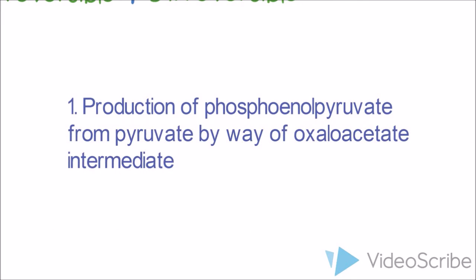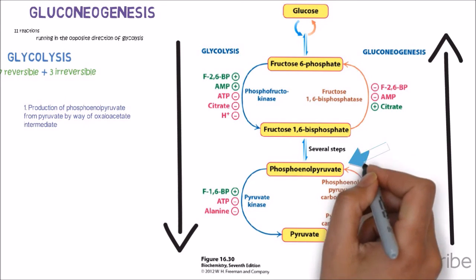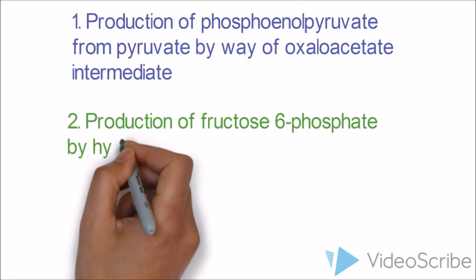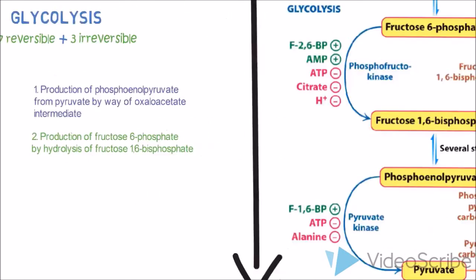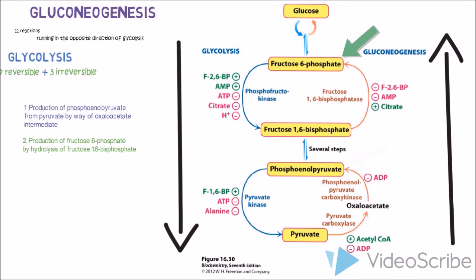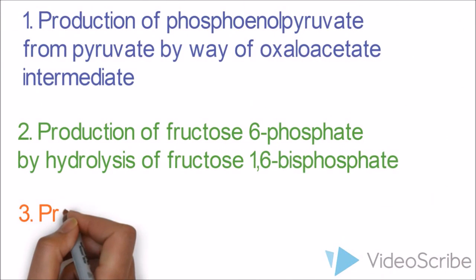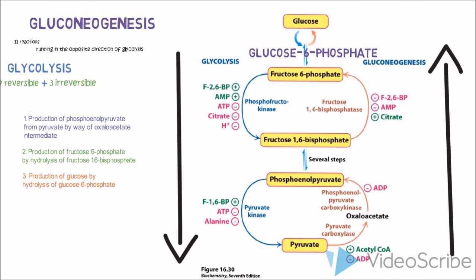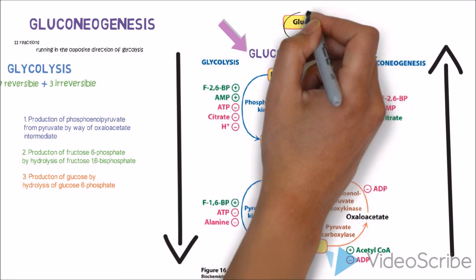The first bypass goes from pyruvate through oxaloacetate as an intermediate to produce phosphoenolpyruvate (PEP) - the opposite direction of glycolysis. The second bypass is the production of fructose-6-phosphate by hydrolysis of fructose-1,6-bisphosphate, which is the reverse of what glycolysis did. The third bypass is the production of glucose by hydrolysis of glucose-6-phosphate, converting it to free glucose.